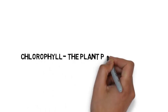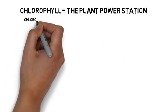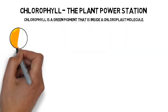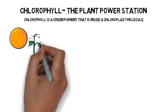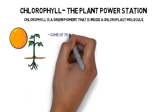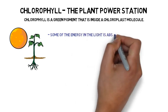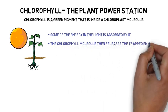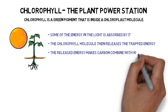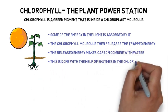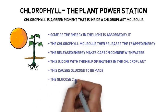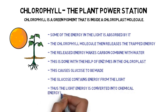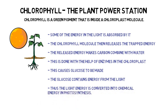Chlorophyll — the plant power station. Chlorophyll is a green pigment that is inside a chloroplast molecule. When the Sun shines on a chlorophyll molecule, some of the energy in the light is absorbed by it. The chlorophyll molecule then releases the trapped energy. The released energy makes carbon combine with water, with the help of enzymes in the chloroplast. This causes glucose to be made. The glucose contains energy from the light. Thus the light energy is converted into chemical energy in photosynthesis.